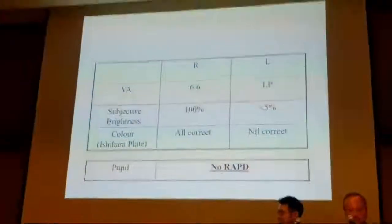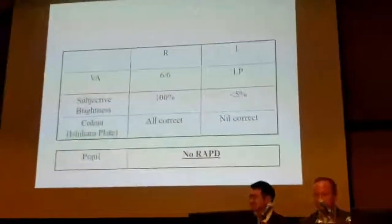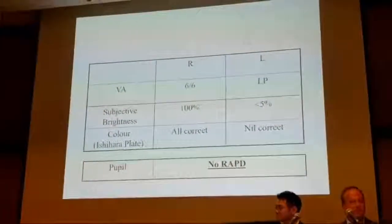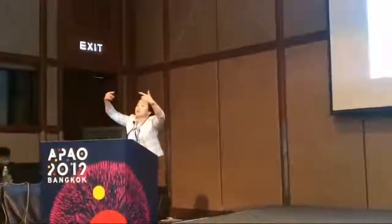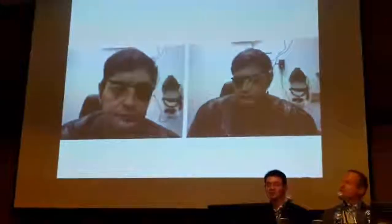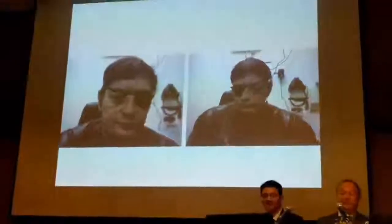I performed the proprioception test on him. I prefaced it by saying, 'Close your right eye — the good eye — are you able to put your fingers together?' He did it beautifully. Then I said, 'Close your right eye — that's your non-seeing eye.' And you get this very bizarre, inaccurate pointing.